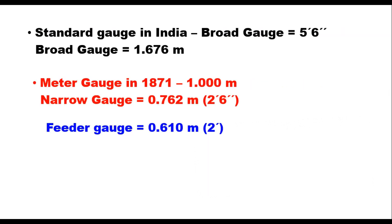In India, the East India Company adopted 1.676 meters or five and a half feet as the standard gauge, and it was called the broad gauge. Countries like Pakistan, Brazil, and Argentina also have the broad gauge of 1.676 meters. In total, about six percent of world railway is laid on this gauge.